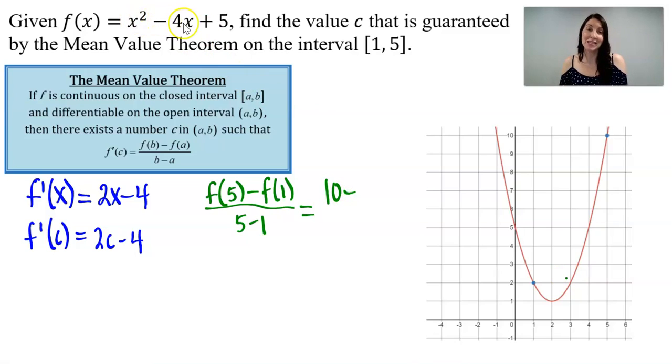Plugging in 1 here, I would have 1 minus 4, which is negative 3, plus 5, which is 2. All over 4, and 8 divided by 4 is 2.